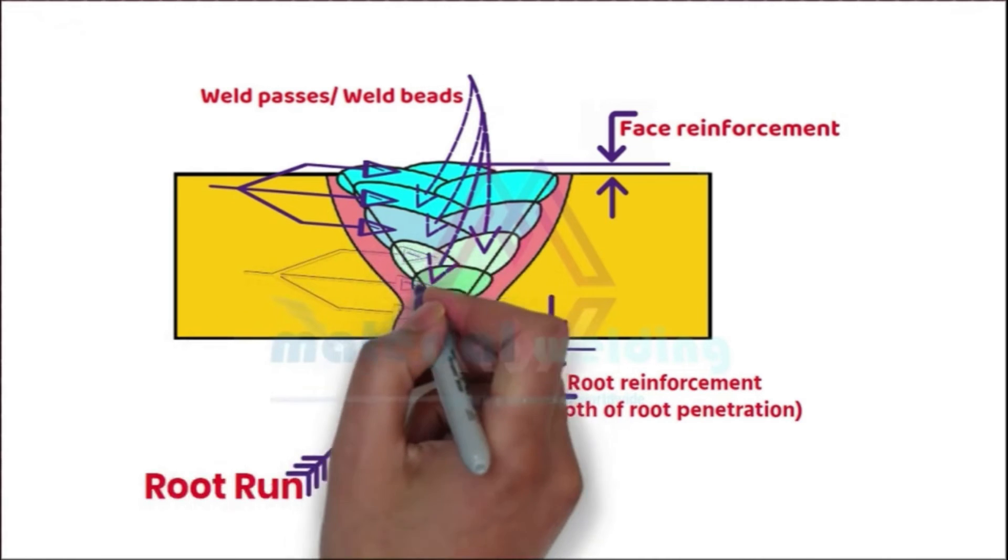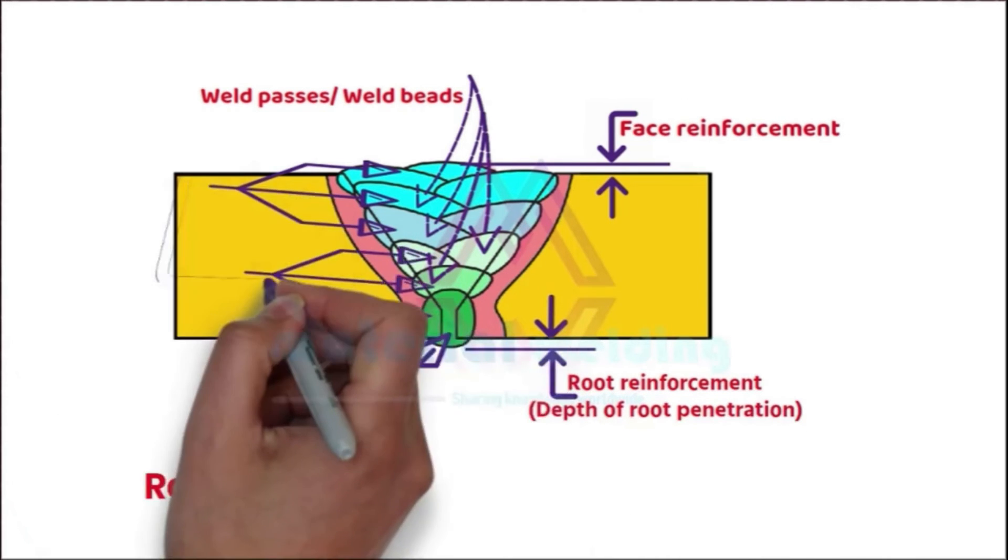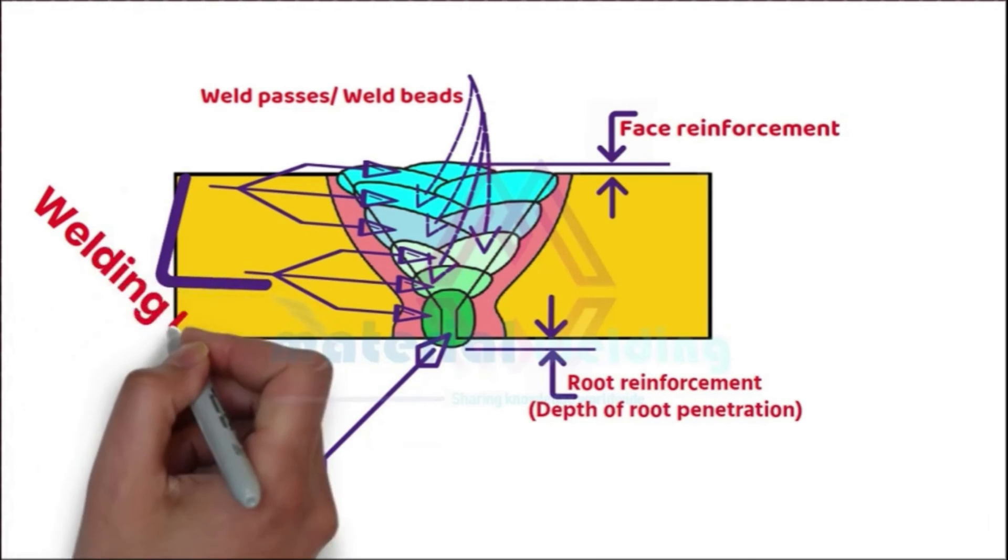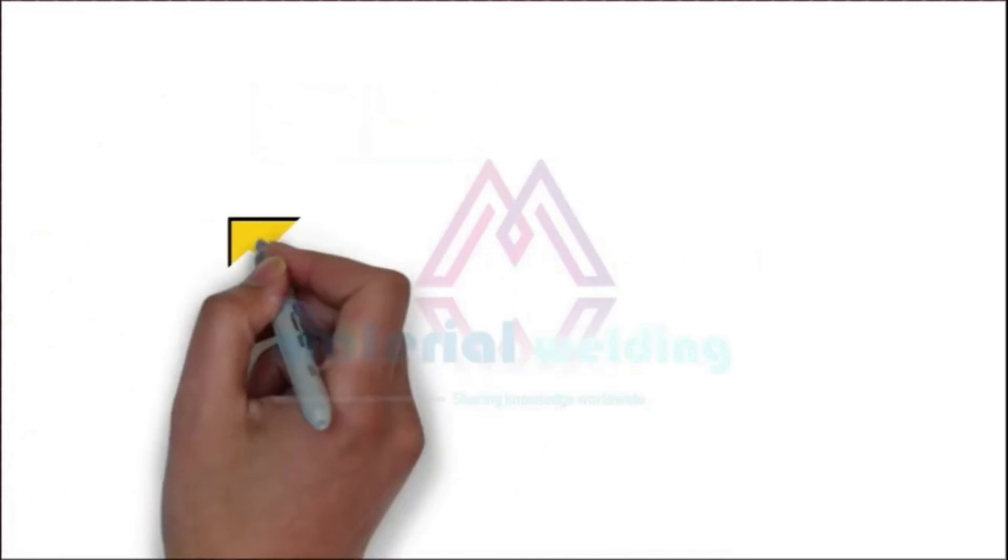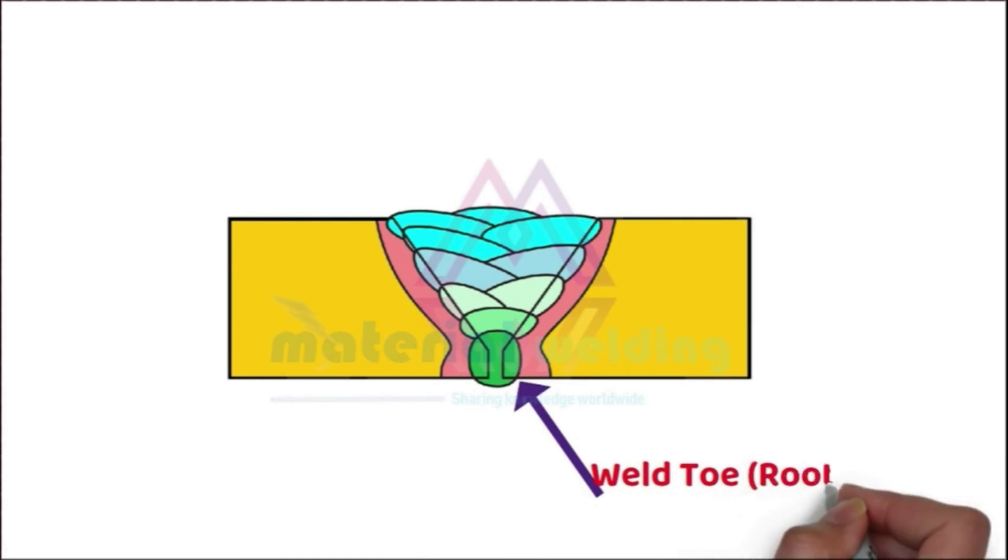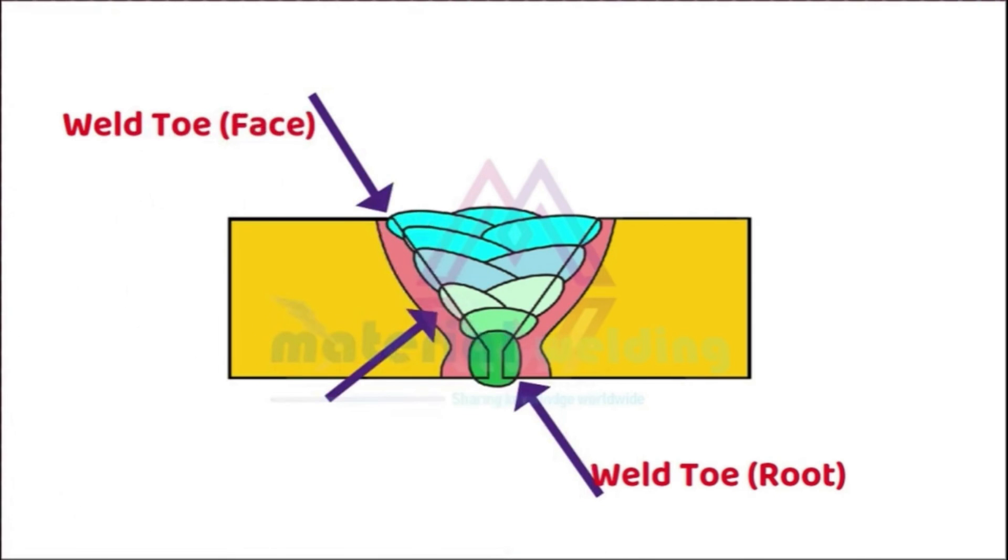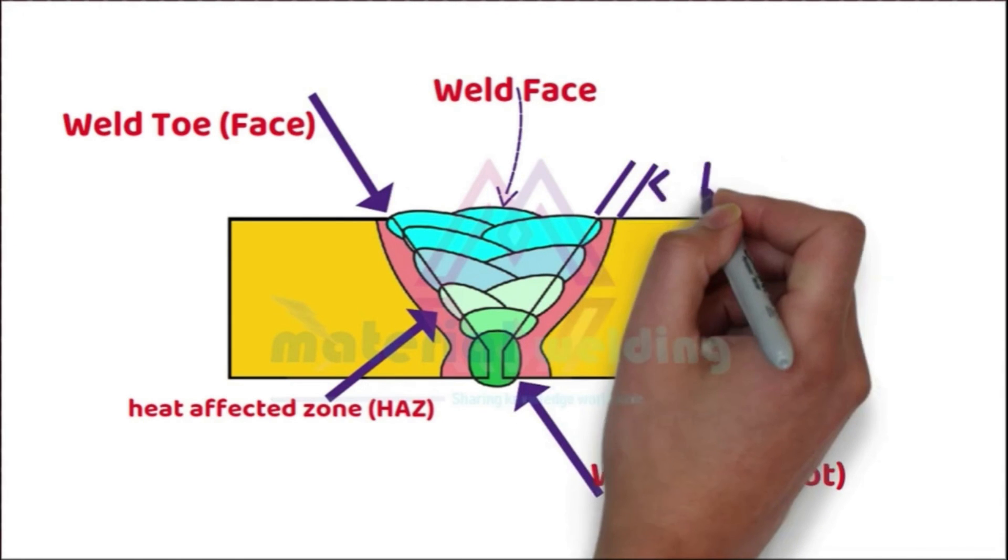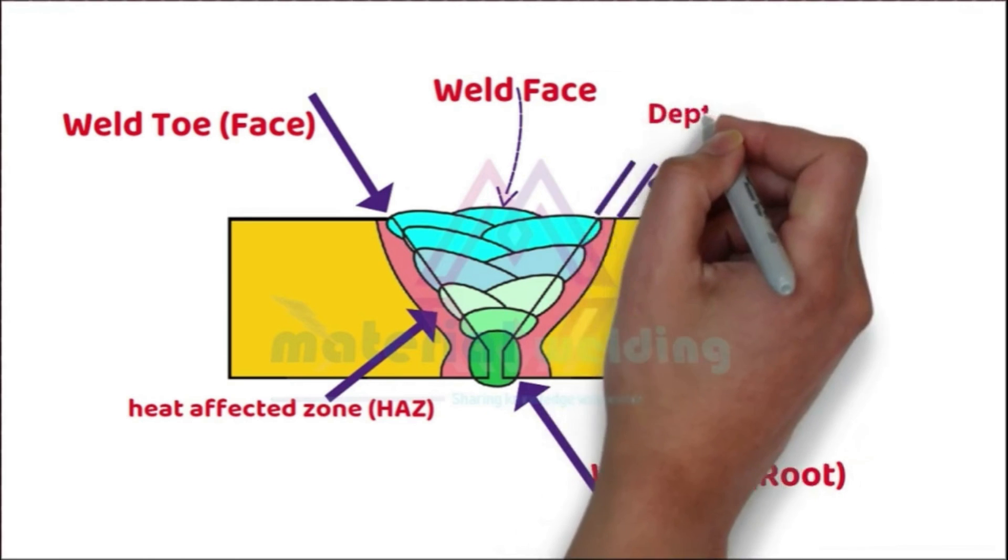Multi pass welded in the same level makes a weld layer. A weld layer can have either a single pass or multi pass. This area is known as Heat Affected Zone or HAZ. The top side is called weld face. This is called depth of fusion or penetration.